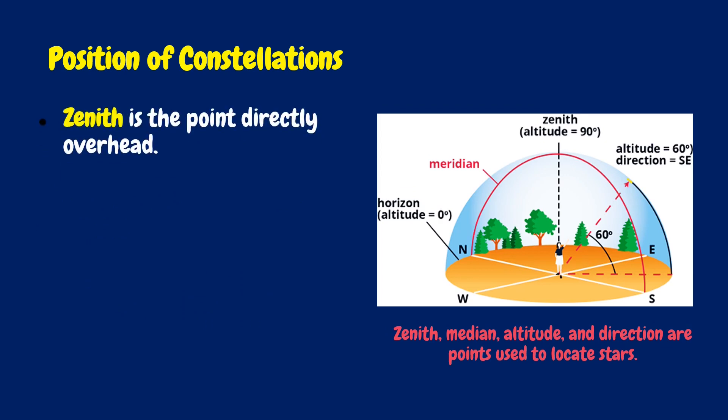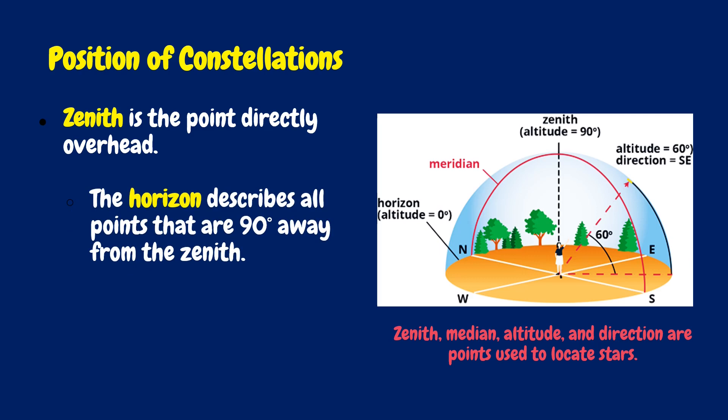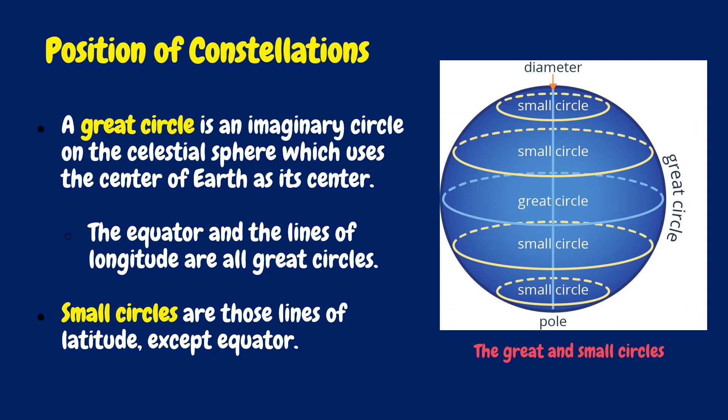Zenith is the point directly overhead. The horizon describes all points that are 90 degrees away from the zenith, while the meridian is the great circle passing through the zenith. A great circle is a plane that passes through the center of the Earth. The shortest distance between any two points on the Earth's surface is attained along the arc of a great circle, while small circles are lines that do not pass through the center of the Earth.